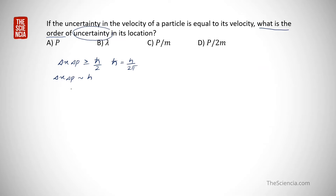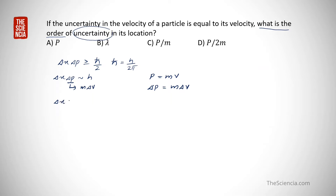We can expand delta p. We know that p is momentum, which equals mass times velocity. So delta p equals m times delta v. We can rewrite the expression as delta x times m times delta v is approximately equal to h.